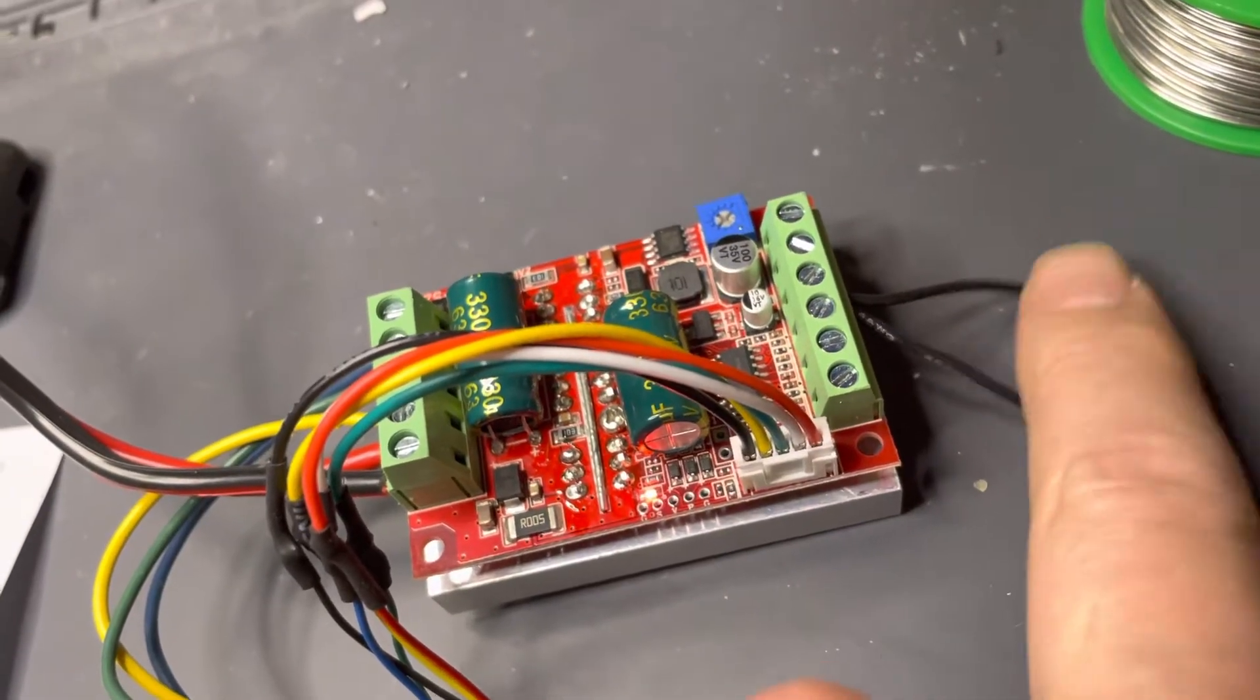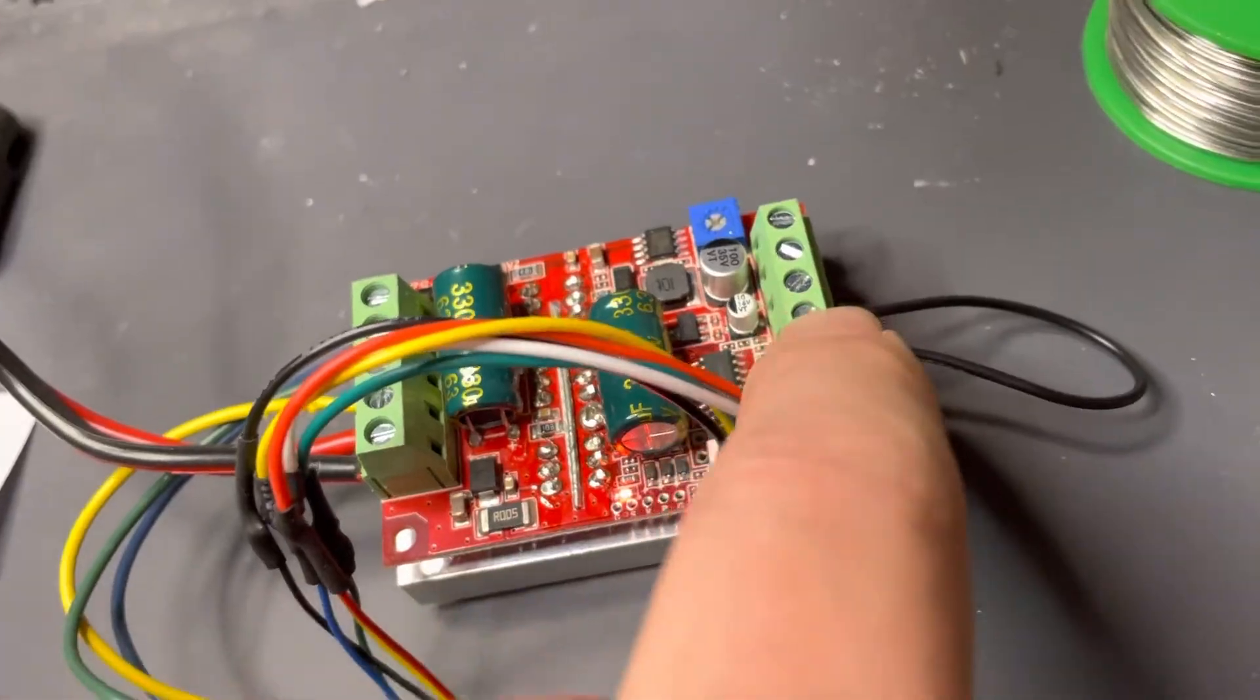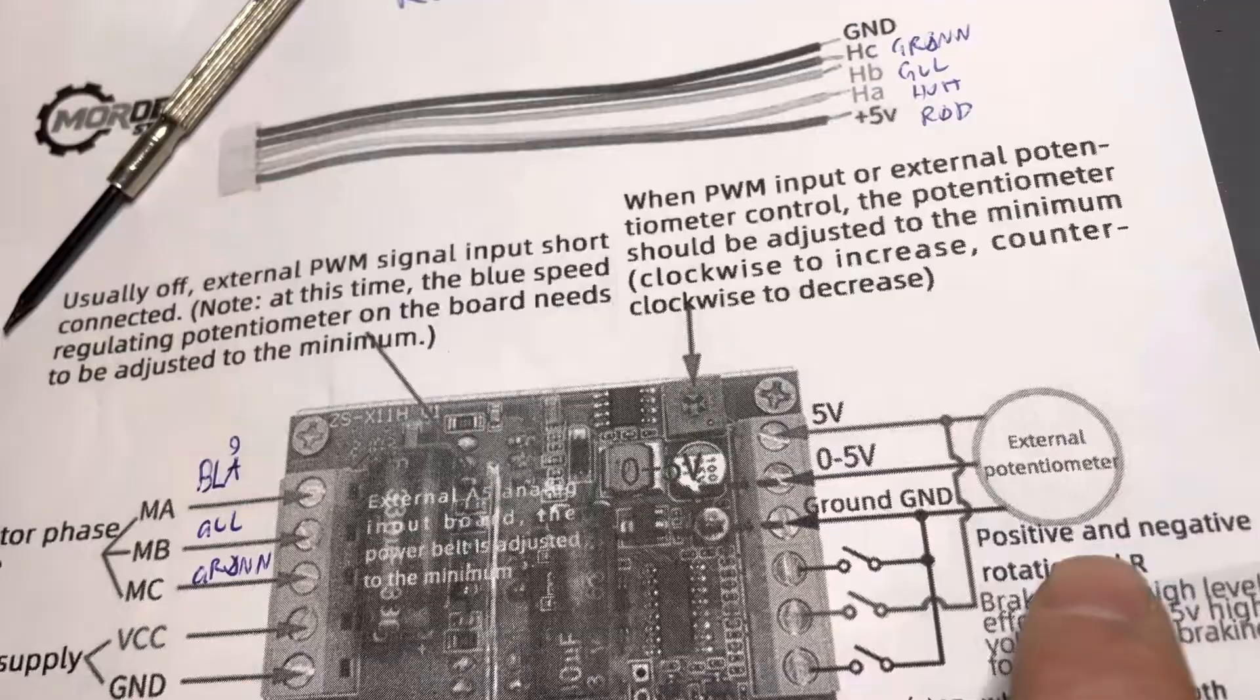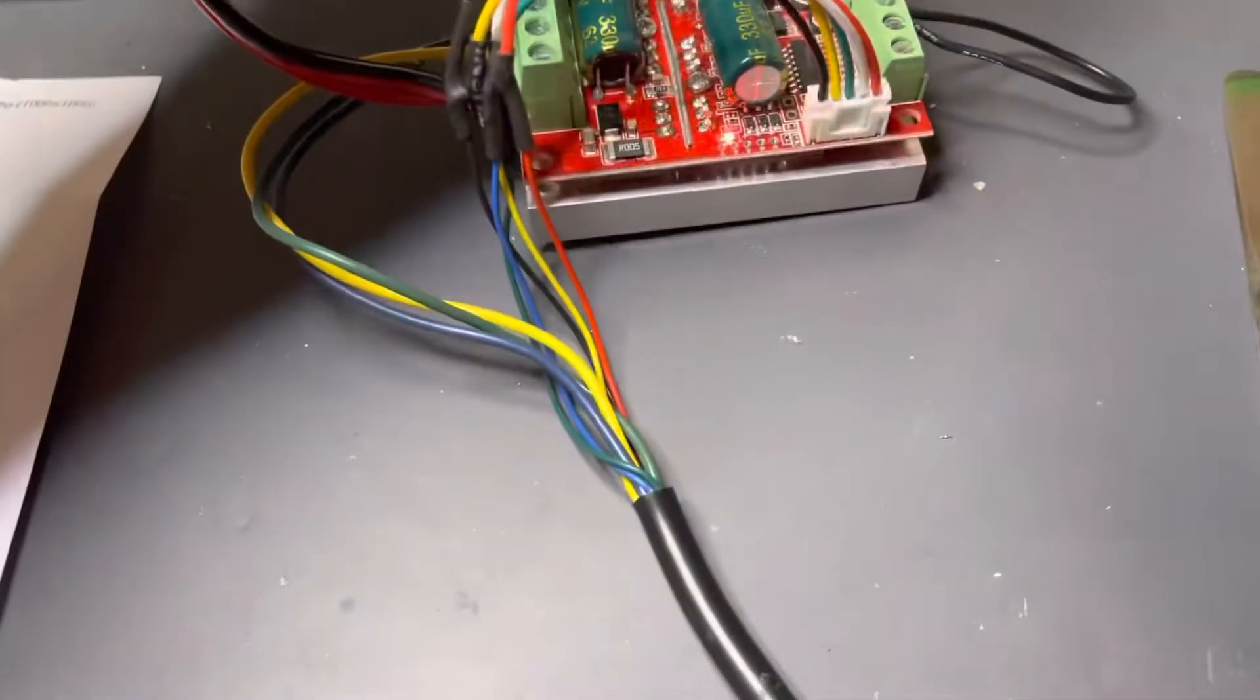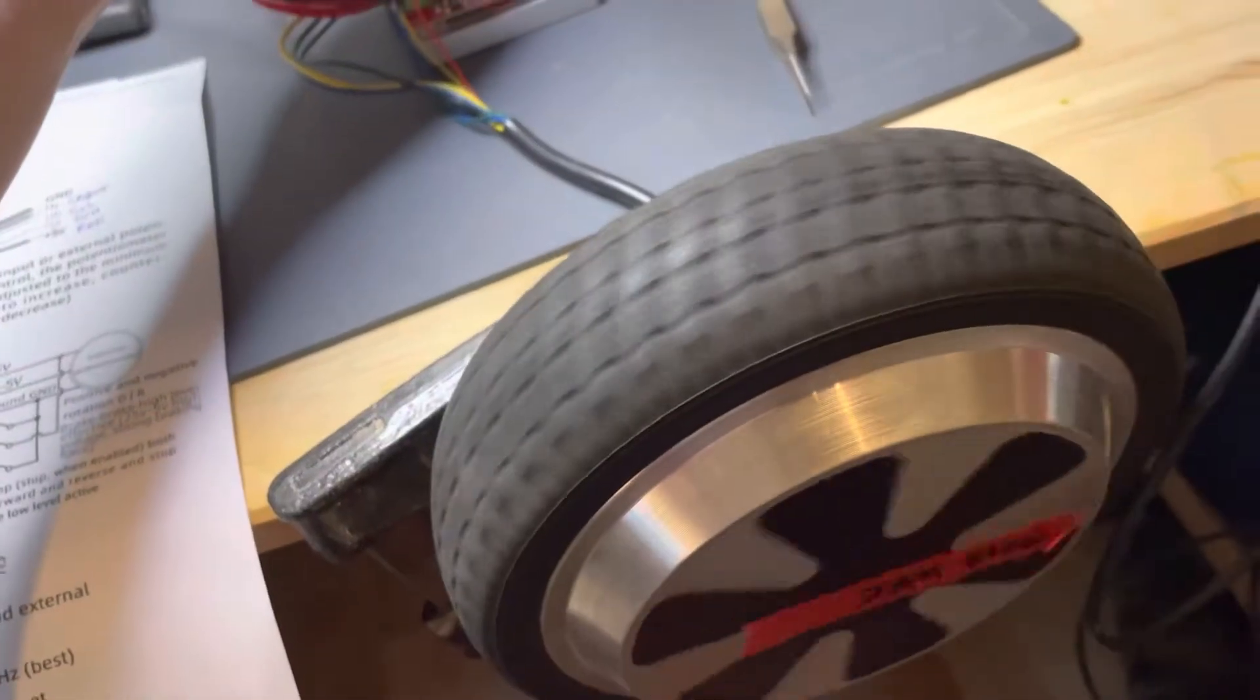And now it will actually run in reverse. So now the jumper here is for positive movement. The ground is connected to the high switch for positive rotation. So now I can use the potentiometer and start it up.